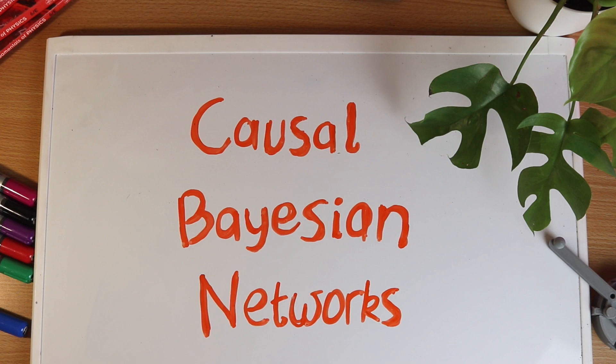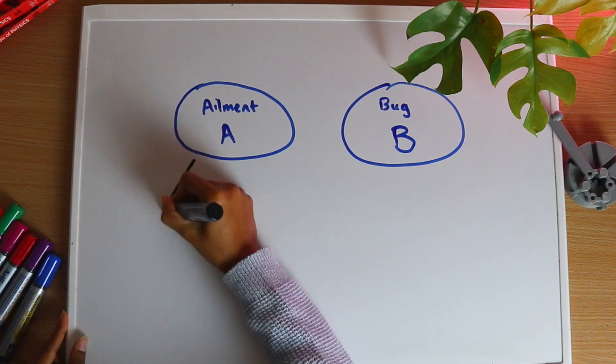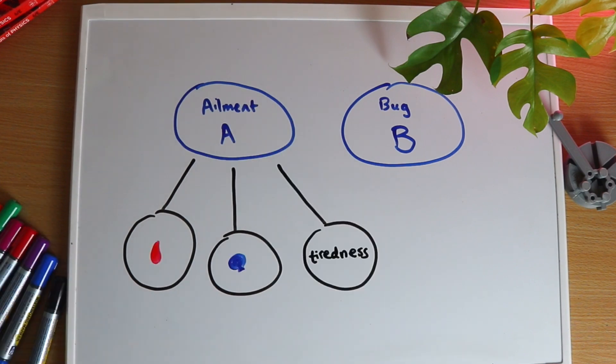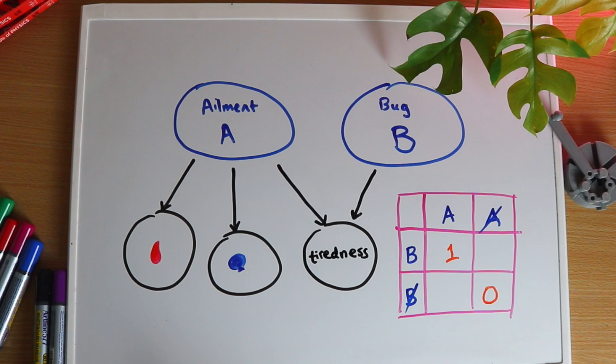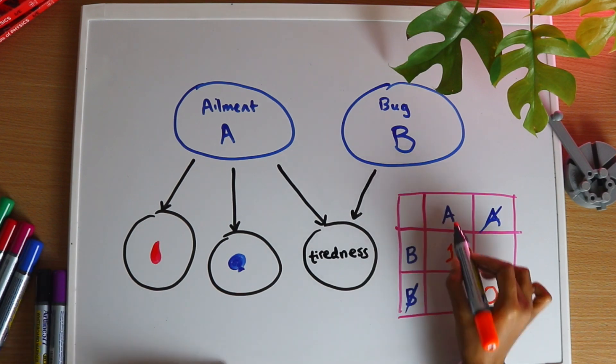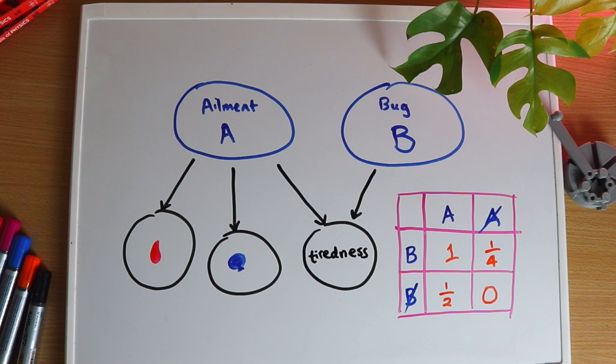Let's see what those are by imagining a simple world where there are only two conditions A and B. It's possible for you to have one of these, none or even both. Each of these has a bunch of symptoms that it can cause. However they'll also have some symptoms in common. Let's say that tiredness is a symptom of both but it's a more common symptom of A than B. What that means is if you have both A and B you'll definitely be tired whereas if you have neither then you won't be tired for sure. But if you only have A then your probability of being tired is a half whereas if you only have B you have a one-quarter probability of being tired.